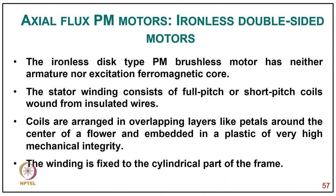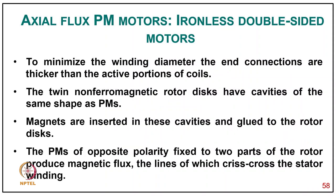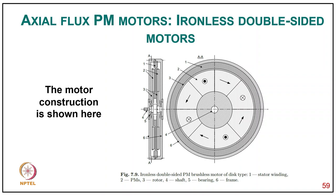Ironless disc-type PM brushless motors have neither armature nor excitation ferromagnetic core. Instead, the winding consists of full-pitch or short-pitch coils wound on insulated wire, arranged in overlapping layers like petals around the center of a flower, and embedded in plastic of very high mechanical integrity. The winding is fixed to the cylindrical parts of the frame. The twin non-ferromagnetic rotor discs have cavities of the same shape as the PMs; magnets are inserted in these cavities and glued to the rotor disc. PMs of opposite polarity fixed to the two parts of the rotor produce magnetic flux that crosses the stator winding. The motor cross-section shows: stator winding (1), permanent magnets (2), rotor (3), shaft (4), bearings (5), and frame (6).